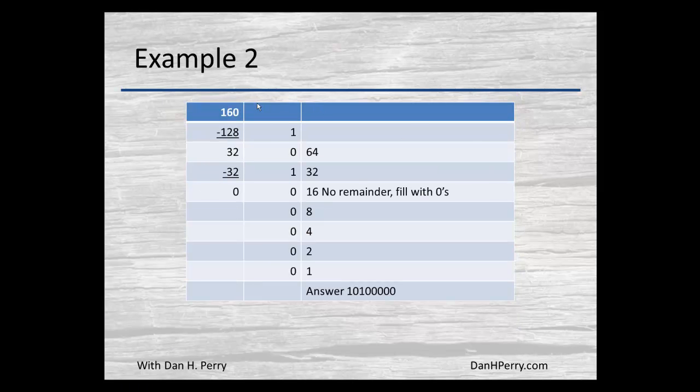Let's try this again, this time with 160. We can subtract off the 128, giving us a 1. That leaves us 32. That will not go into the 64, so we put down a 0. But it goes evenly into the 32, so we bring down a 1. Since there's no remainder, we write down zeros for all the rest of the powers, giving us 10100000 for our final result.